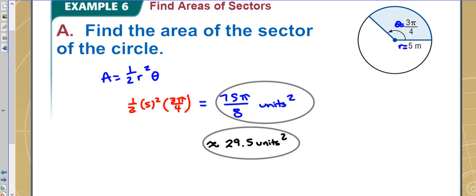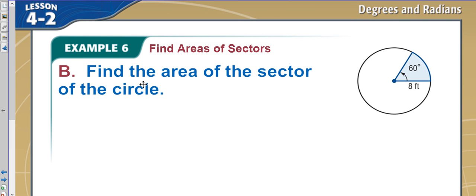So either of those two would work. Let's try to find it again. And so my formula one more time was A equals one-half R squared theta. This time it gives the theta in degrees. So again, when I plug this in, I'll have one-half. My radius is eight.